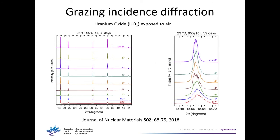Here's an example of grazing incidence research on uranium oxide exposed to air. This group changed the grazing incidence angle from large to smaller and smaller — more and more grazing going down in the figure. They noticed that peaks get weaker and broader. Narrowing in on the 18-degree region, you can see how the peaks get weaker, broader, and also shift in position. The lower patterns are more sensitive to the surface.